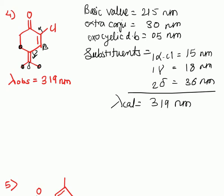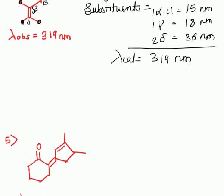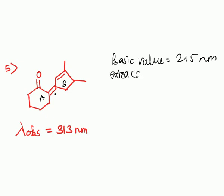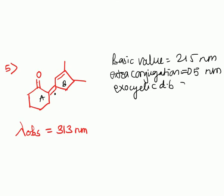Next example: the basic value is 215 nanometers. This double bond is exocyclic to both the 6-membered ring and the 5-membered ring. Extra conjugation is 1, contributing 30 nanometers. The exocyclic double bond contributes 10 nanometers, since it is exocyclic to two rings.